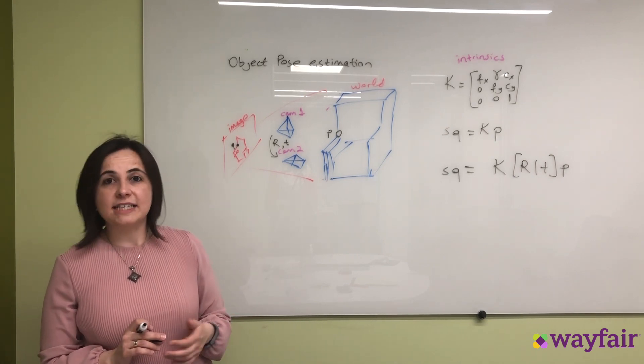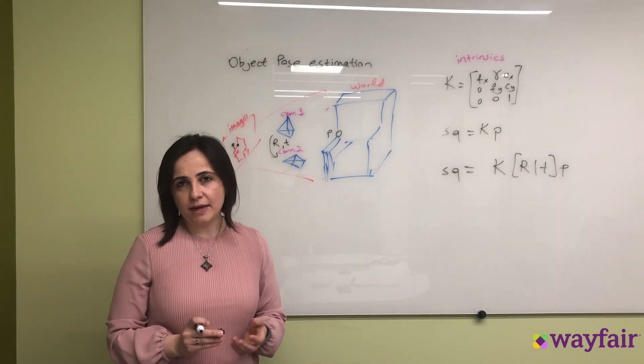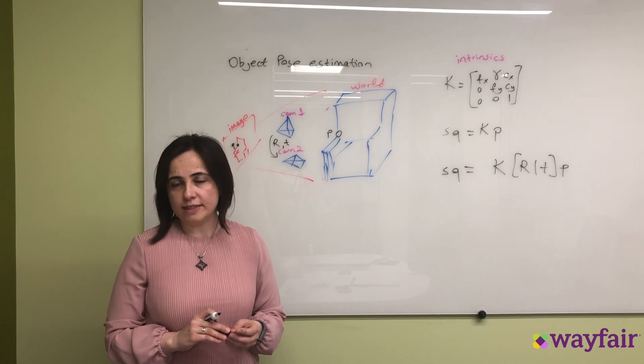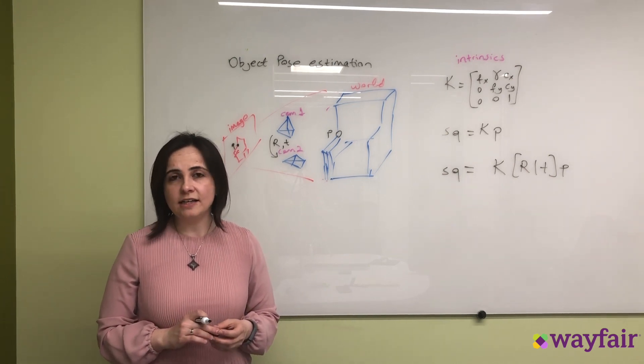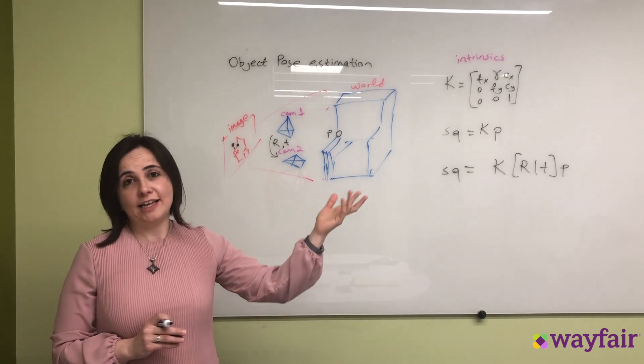So in order to filter out these outlier correspondences, we use another method called random sample consensus or known as RANSAC, so that we can much more accurately estimate rotation and translation.